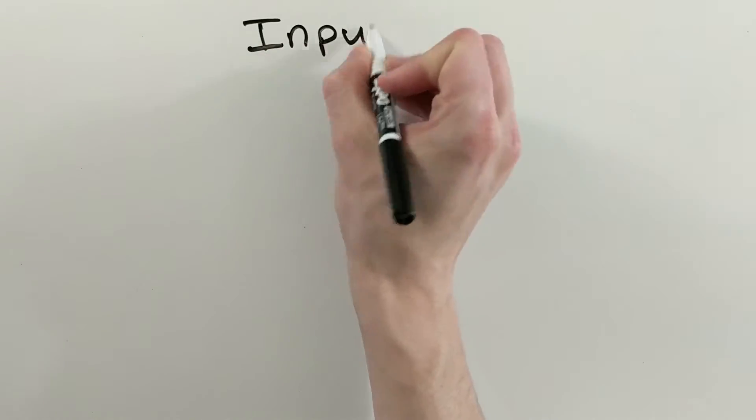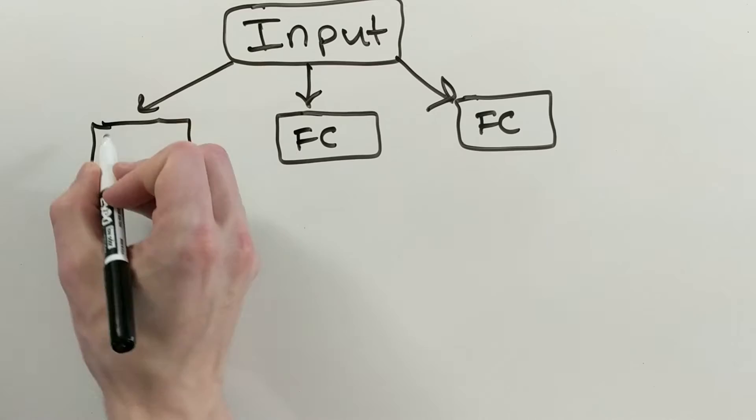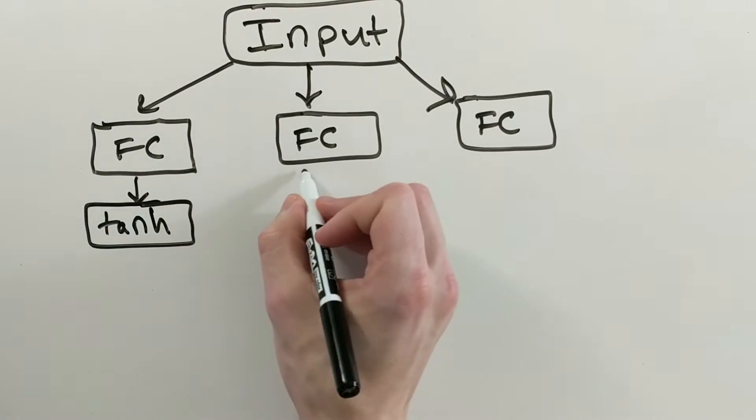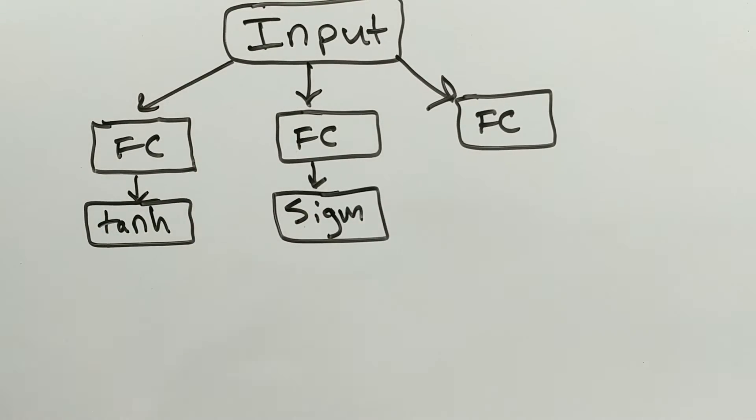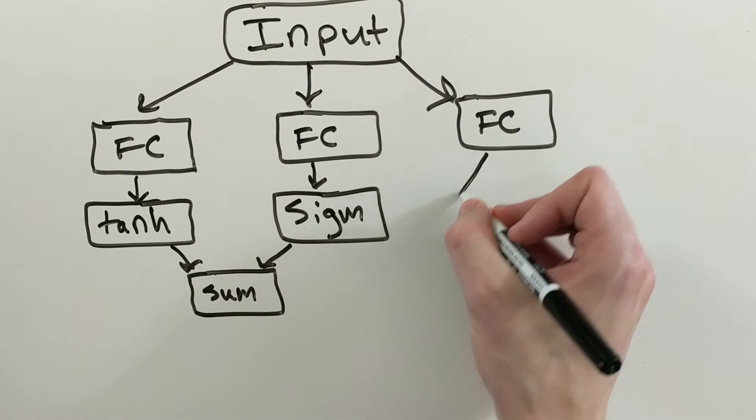For instance, a deep neural network could have three fully connected blocks attached to the input, then take the hyperbolic tangent of the output of the first block and the sigmoid of the second, then sum those two blocks together before multiplying that by the third block.